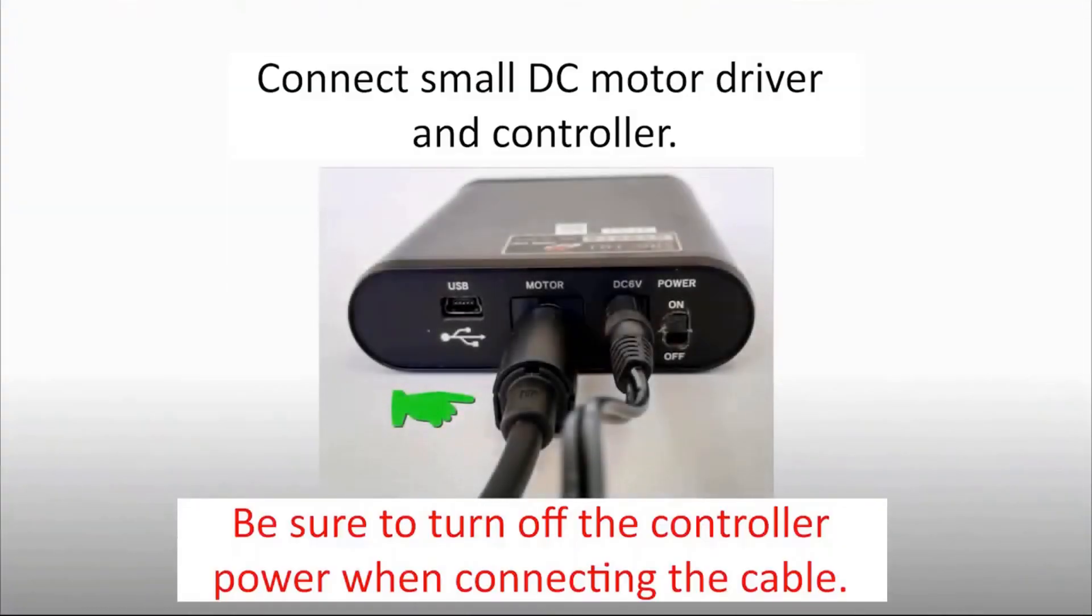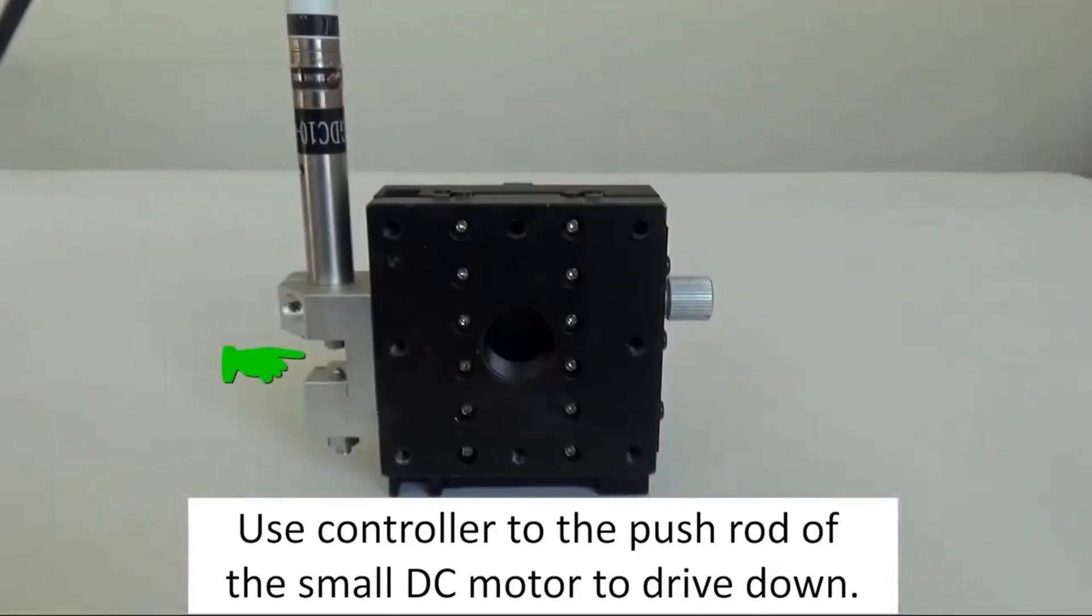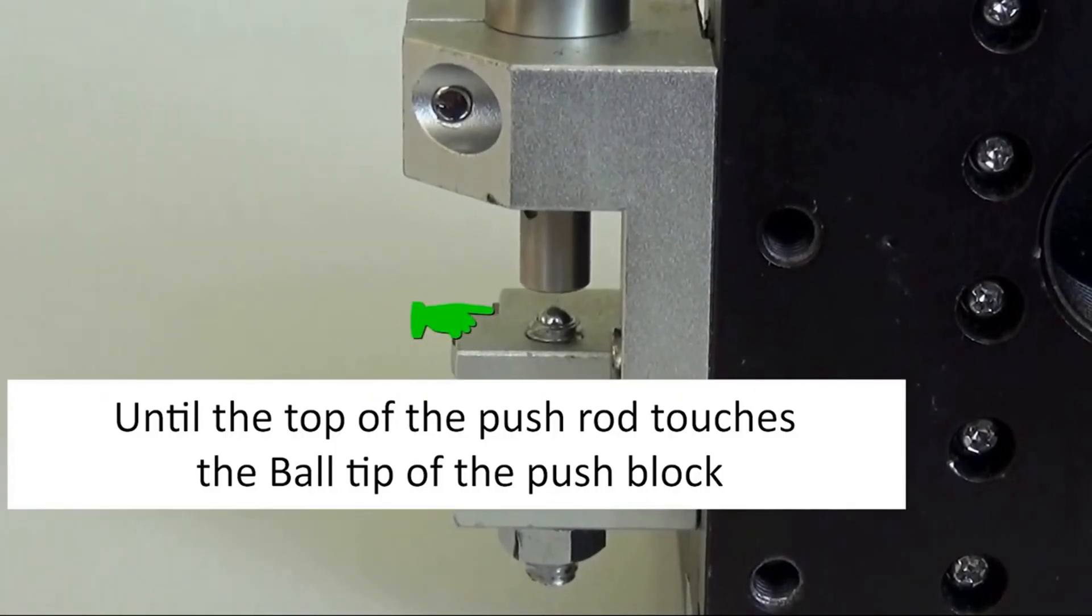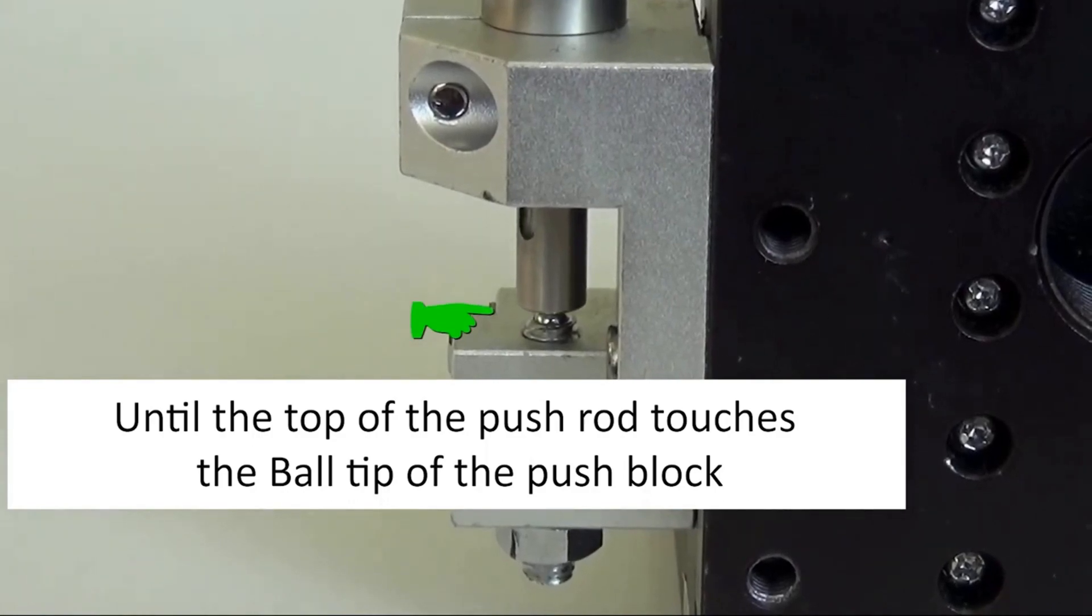Connect the motor driver to the SRC101 controller. It's important to note that the controller power should be turned off when connecting the cable. Once connected, use the controller to push the rod of the motor down until the top of the rod touches the baffle where the ball is installed.